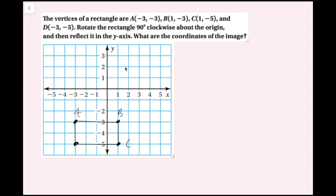Now I'm going to rotate this 90 degrees clockwise. Clockwise means: top goes right, right goes down, down goes left, left goes up. That's one 90-degree turn. I'll take each vertex, figure out how I get there from the origin, and then change all those directions accordingly.